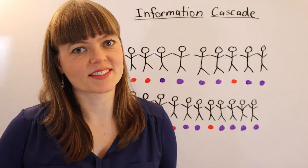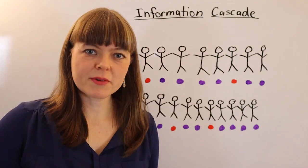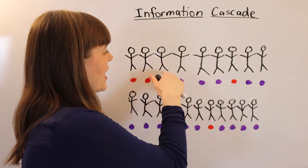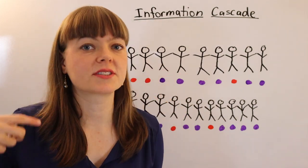I would like to explain information cascades. Information cascades are about situations where every individual has private information about something.